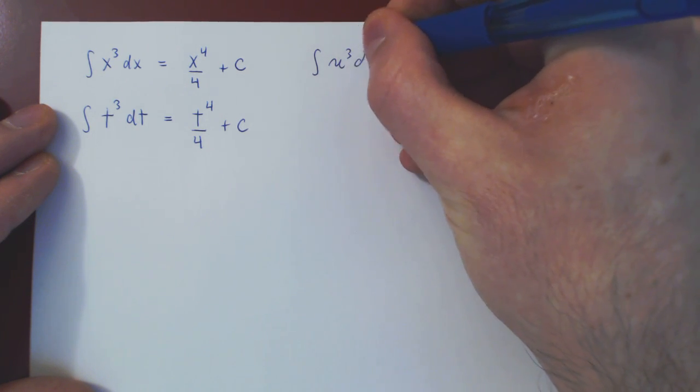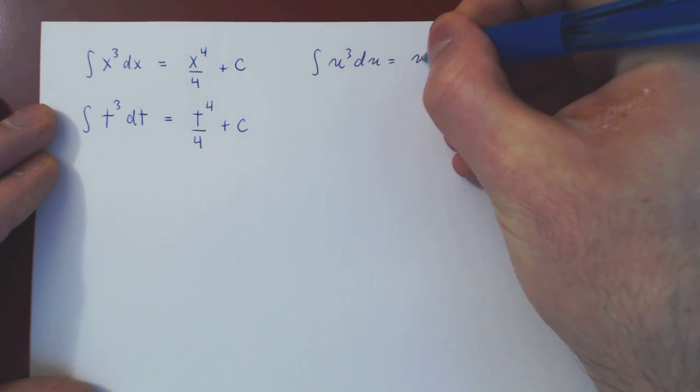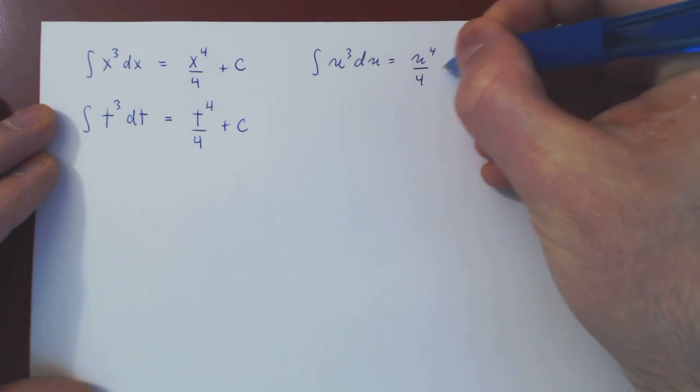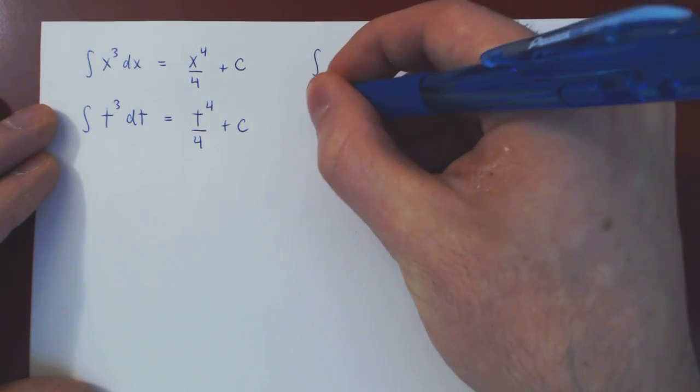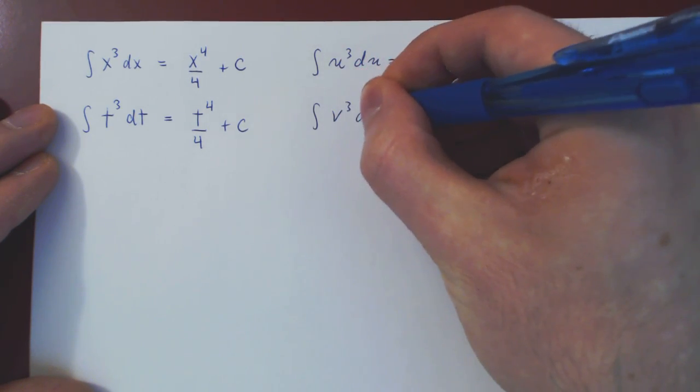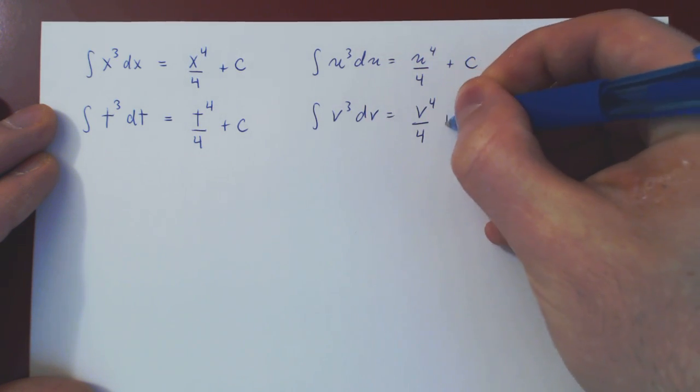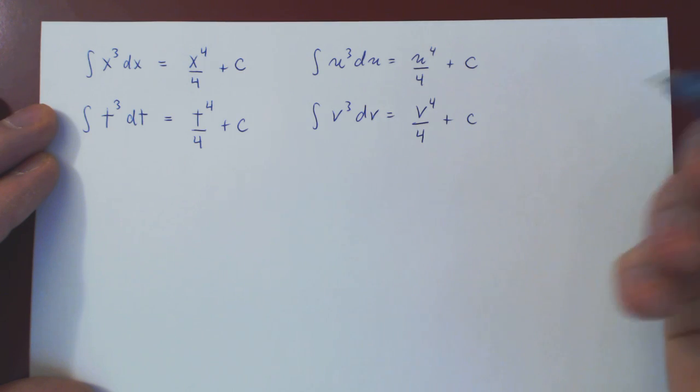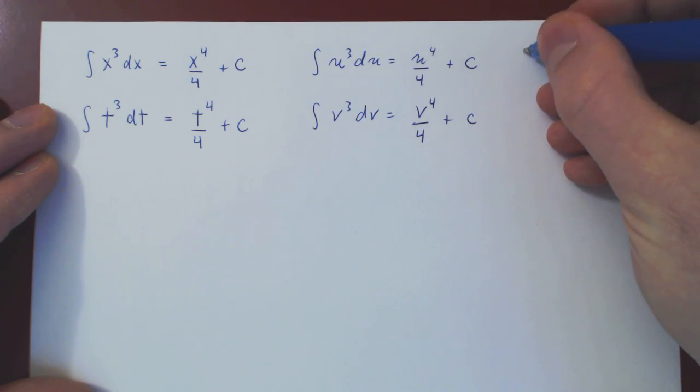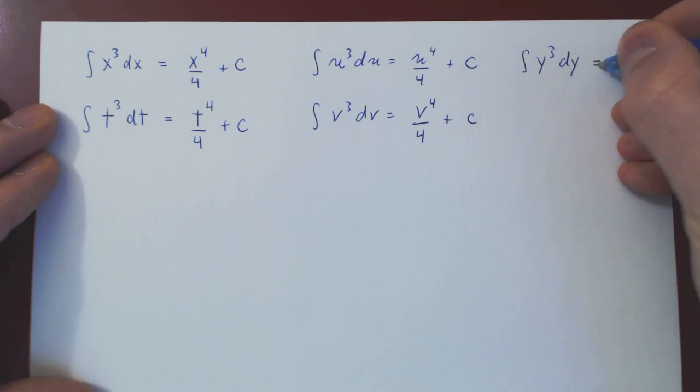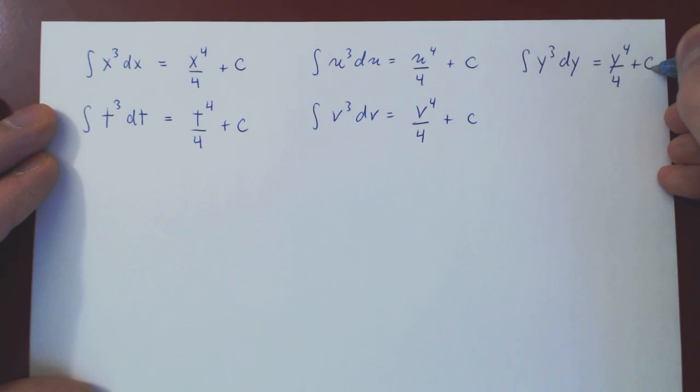So integral of u cubed du is u to the 4 over 4 plus c. Integral of v cubed dv equals v to the 4 over 4 plus c. And you could also integrate with respect to y as well. The integral of y cubed with respect to y is, again, y to the 4 over 4, of course, plus c.